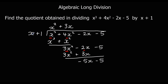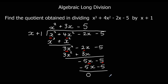One more time: minus 5x divided by x is minus 5. We multiply: minus 5 times x is minus 5x, minus 5 times 1 is minus 5. Final subtraction leaves nothing — no remainder. So the quotient is x squared plus 3x minus 5.